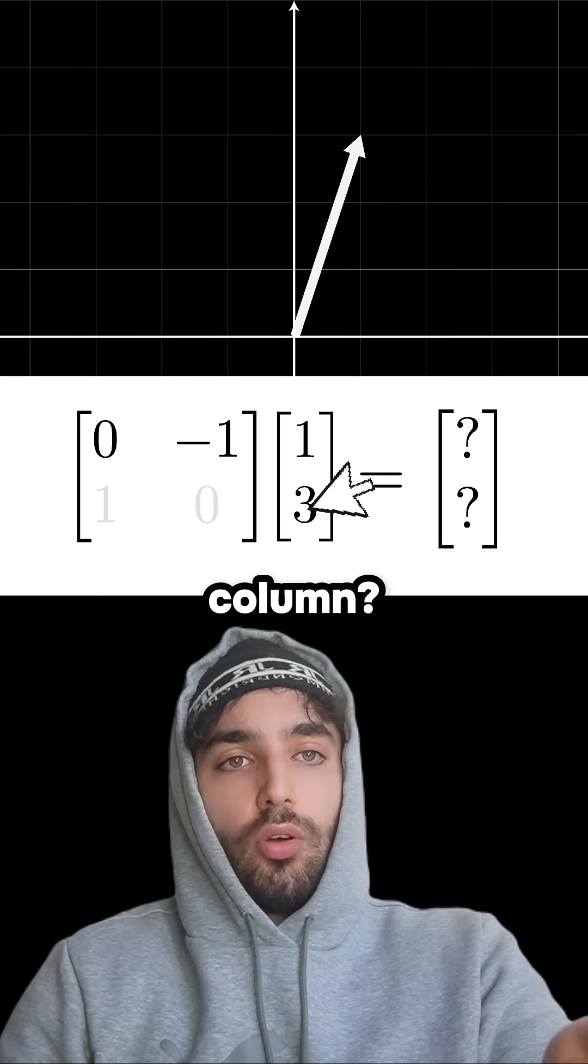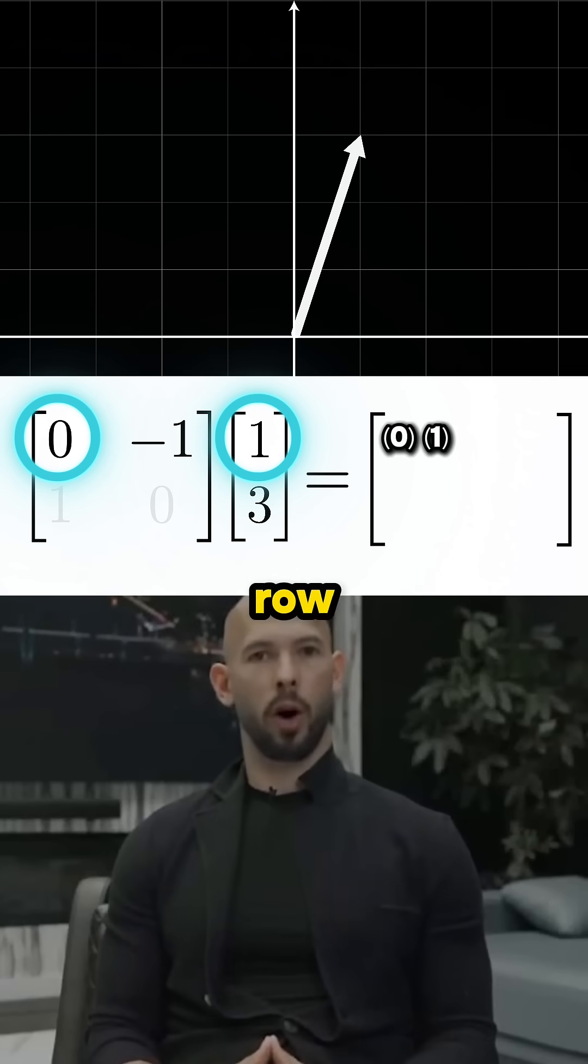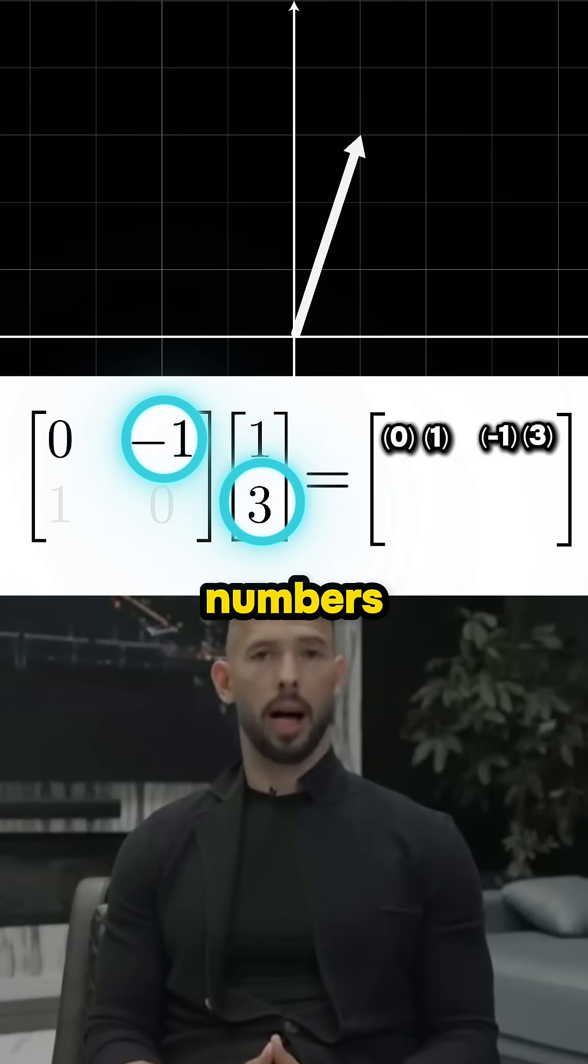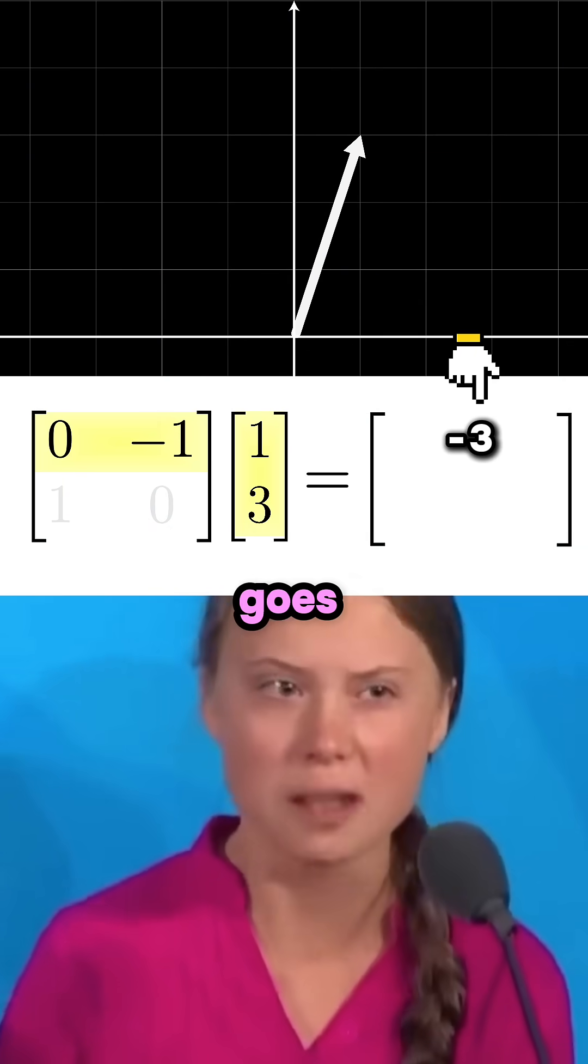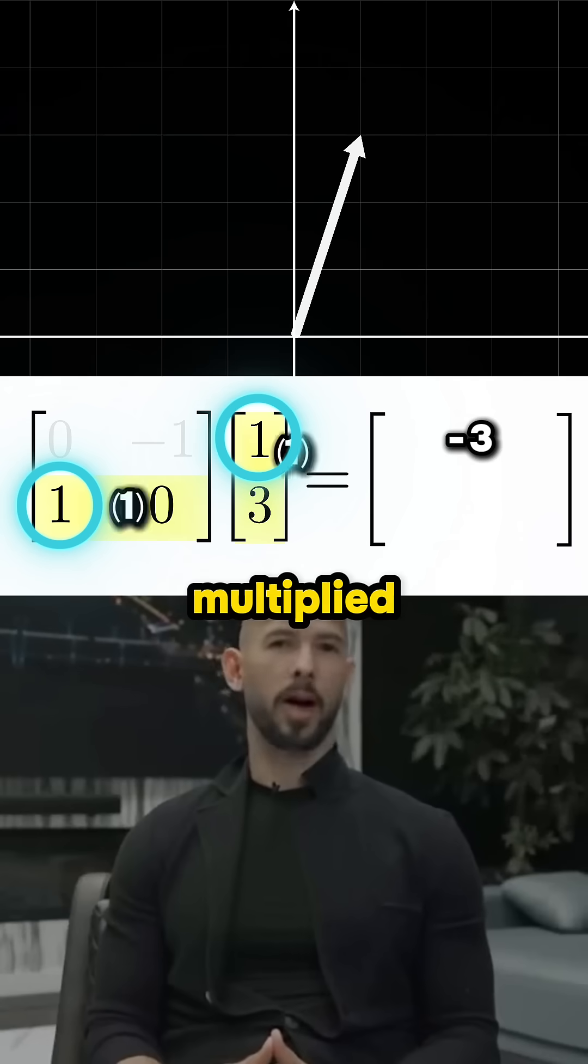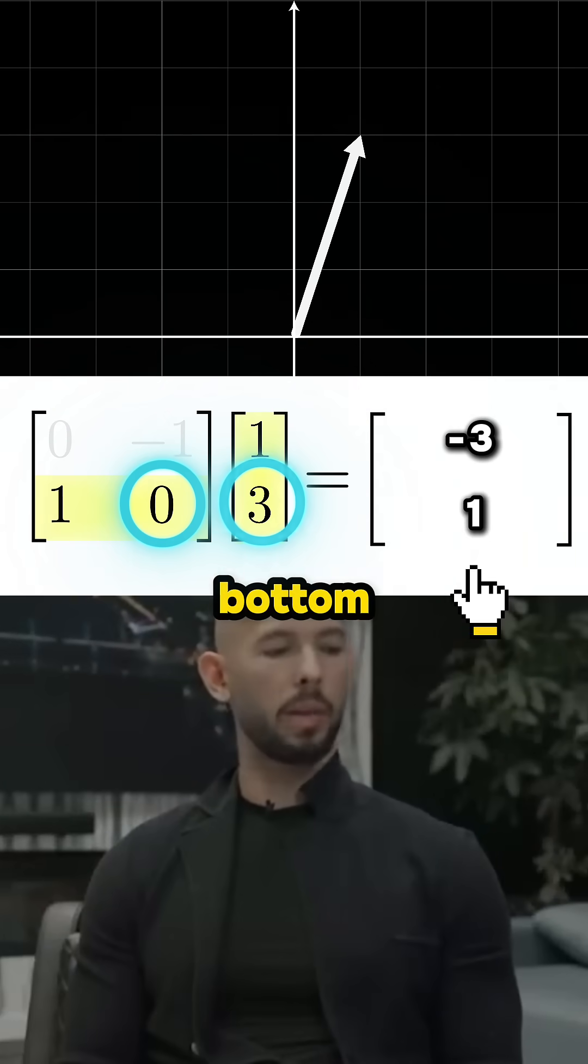How are you going to times a row by a column? You just times the first two numbers in the row and column, then times the second two numbers and add everything together. The first matrix row multiplied by the vector column gives us the number that goes here, and then the second matrix row multiplied by the vector column gets us this bottom number.